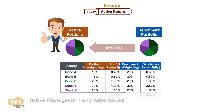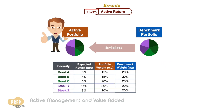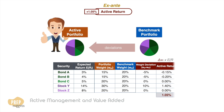Another way to calculate the active return is to sum the product of the deviation in weights and the expected return for each security. The manager made deviations in allocation for three of the securities; multiplying by their expected returns respectively, we also get an active return of 1.05%. For this method, the formula for active return is expressed as the sum of active return contribution from each security.